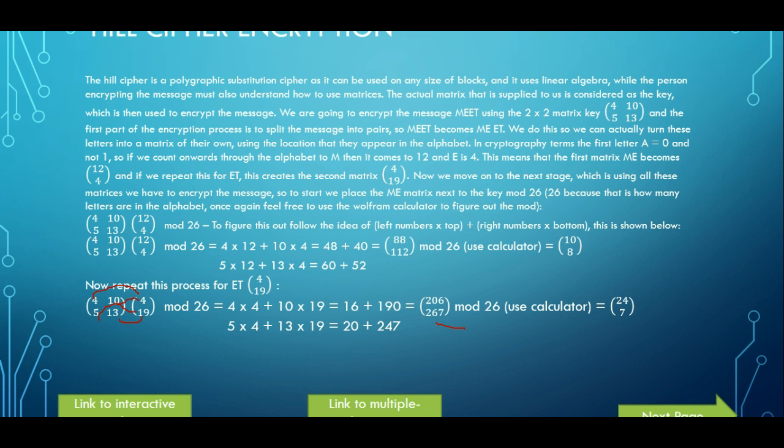Add them together. 5 times 4 is 20, 13 times 19 is 247, 20 plus 247 is 267. So that gives us this matrix here, we mod that with 26 once again in the calculator and that gives us this answer here, 24 and 7. So we have encrypted the second part of our message ET with 24 and 7. So to complete the actual encryption all we have to do is then convert these matrices that we just created into letters. So 10 and 8 back into letters is K and I, 24 and 7 back into the letters is Y and H. So this is our ciphertext K-I-Y-H. We have encrypted our message MEET with K-I-Y-H.